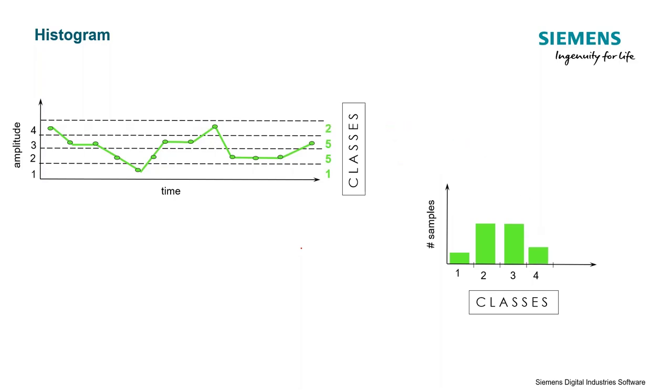And there we have the amplitude distribution of our data. So this is known as a histogram. And depending on the type of signal, we might have different types of distributions for our data.